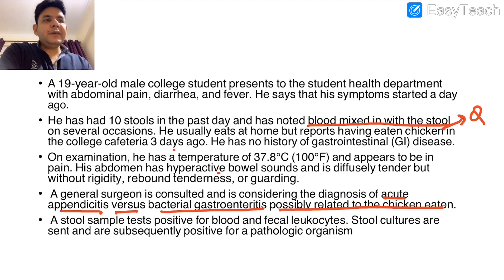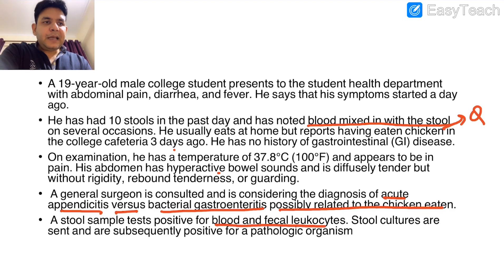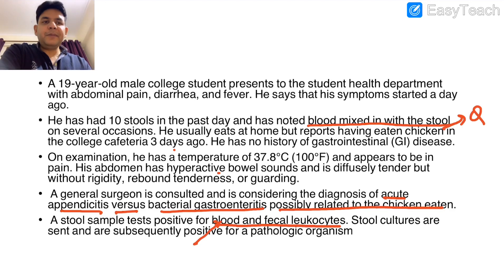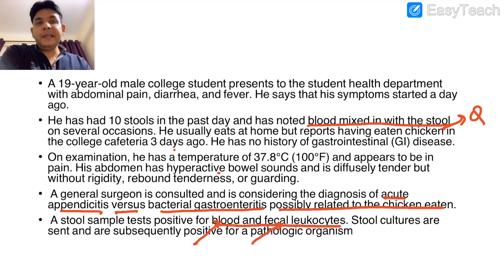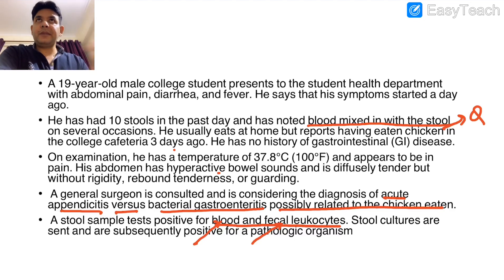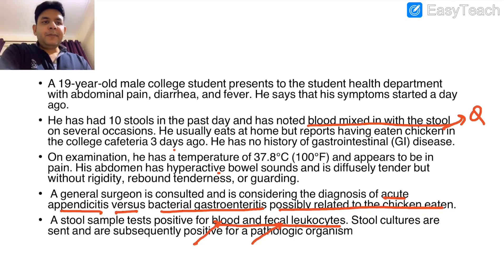A stool sample tests positive for blood and fecal leukocytes. The presence of fecal leukocytes means this is an inflammatory form of diarrhea — inflammatory and invasive — and that is why fecal leukocytes are observed in this particular case.